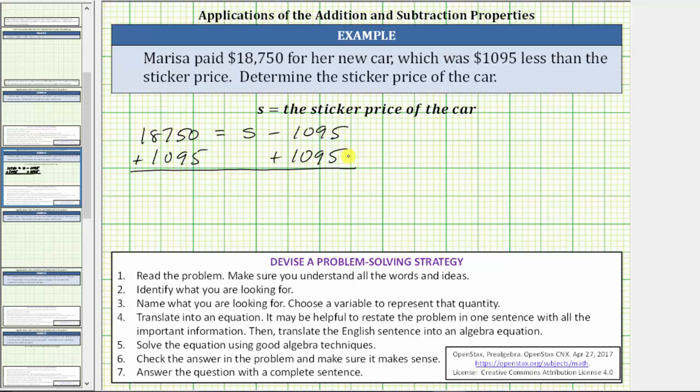Let's simplify the right side first. On the right, we have negative $1,095 plus $1,095, which is zero. The right side of the equation simplifies to S. We have S equals $18,750 plus $1,095 is equal to $19,845, which means the sticker price was $19,845.